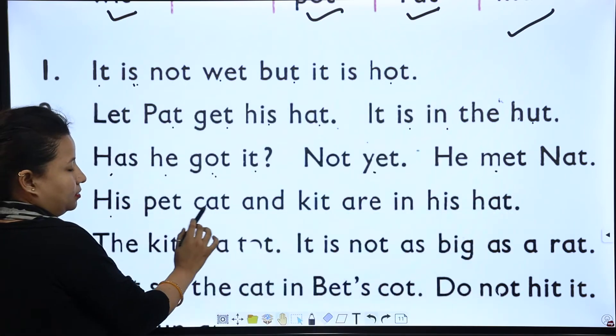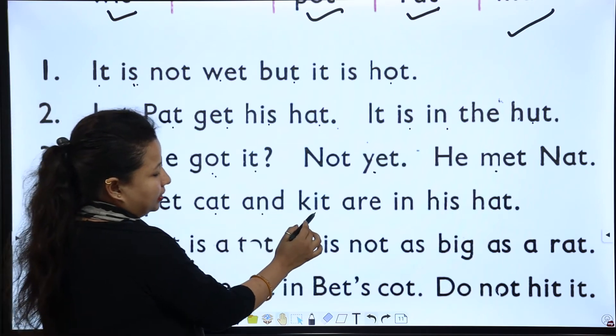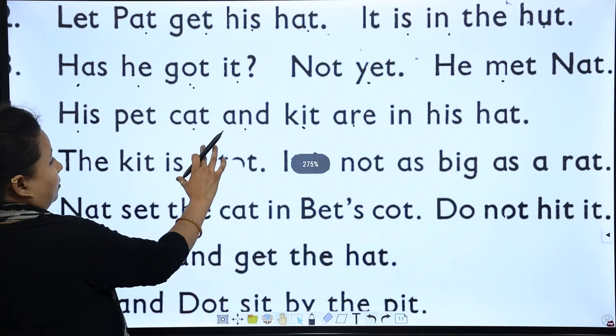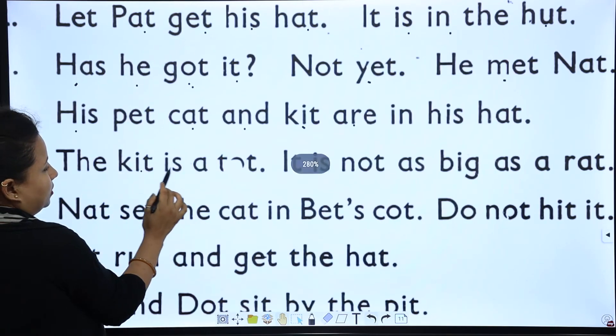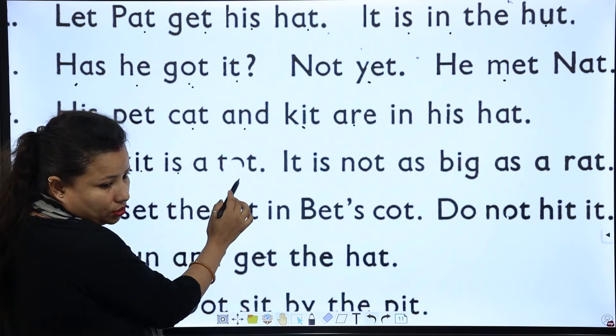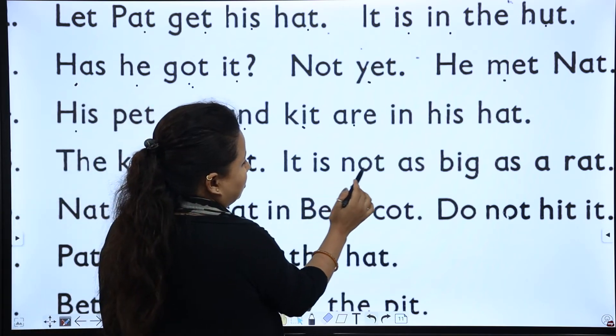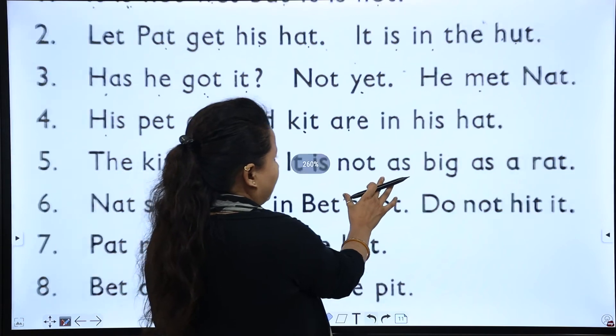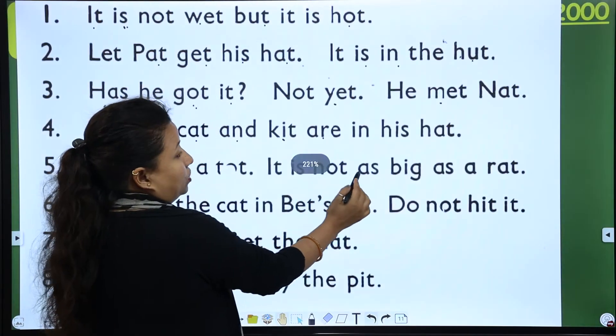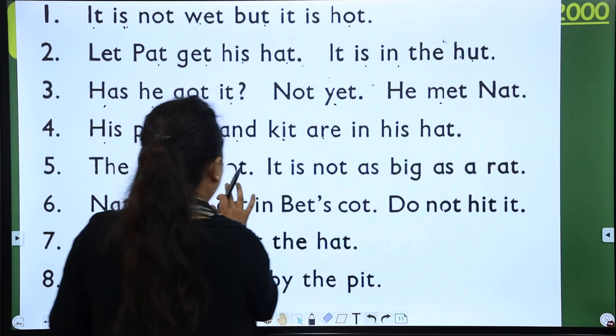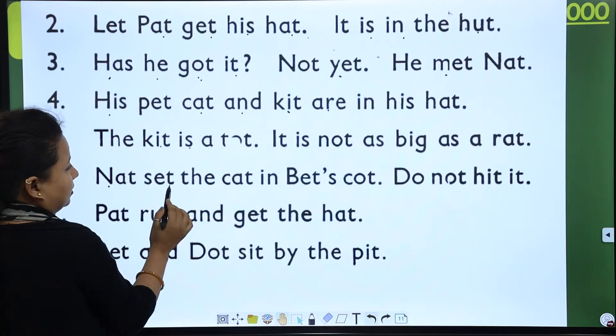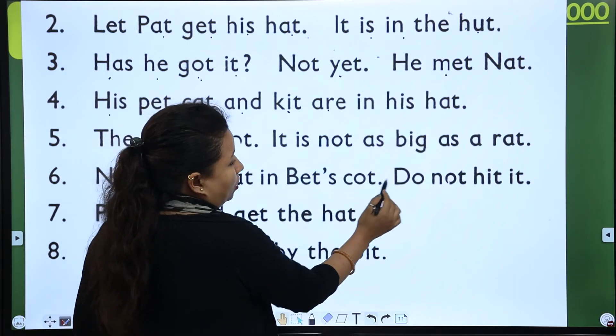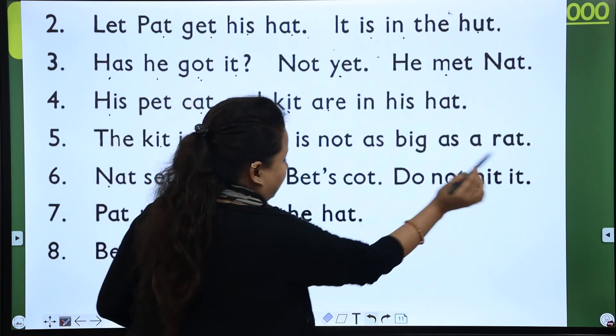His pet cat and kit are in his hat. The kit is a tot. It is not as big as a rat. It is not as big as a rat. Nat, set the cat in pet's cot. Do not hit it.